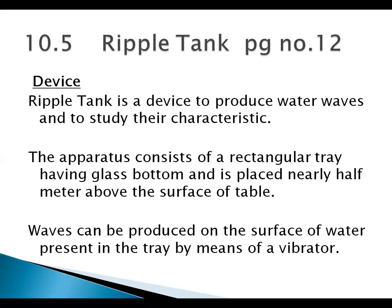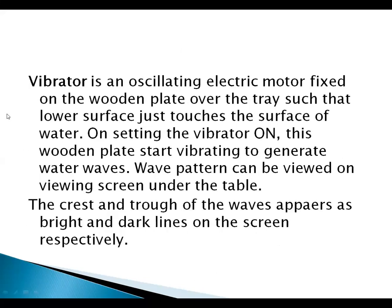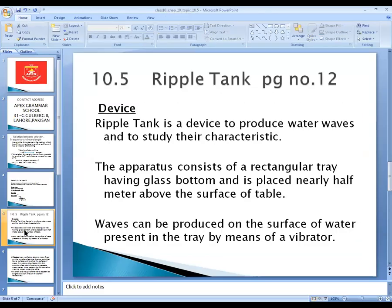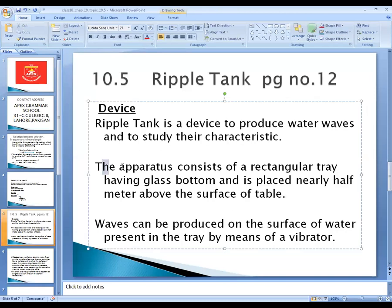This apparatus consists of a rectangular tray having a glass bottom and is placed nearly half a meter above the surface of the table. If you open your textbook to page number 12, you will find the image of this ripple tank in figure 10.11. The rectangular tray is like a shallow table where we put the water in. The apparatus is placed half a meter above the table surface.